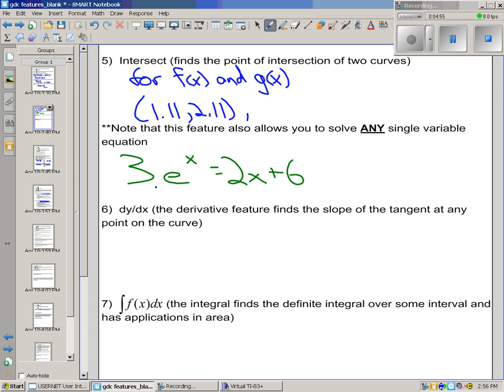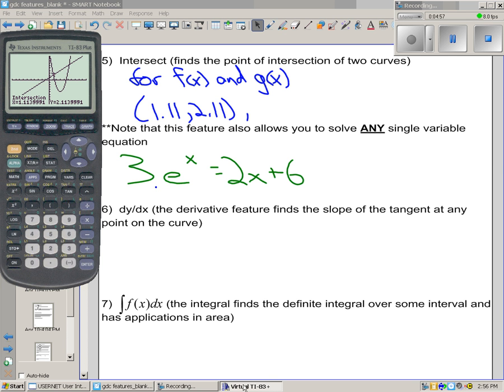And there's another intersection. I go through the process again. First curve. Yep, that's my first curve. Yes, that's my second curve. I'm going to guess. Looks like it's around 5. Maybe I'll just type that in. And it's at 5.39, 6.39.